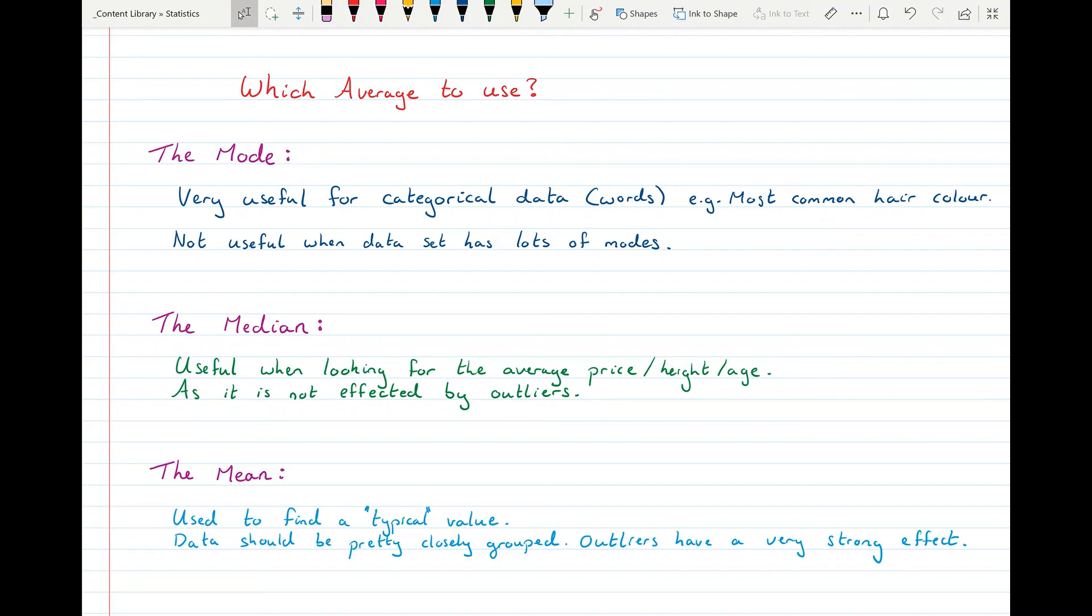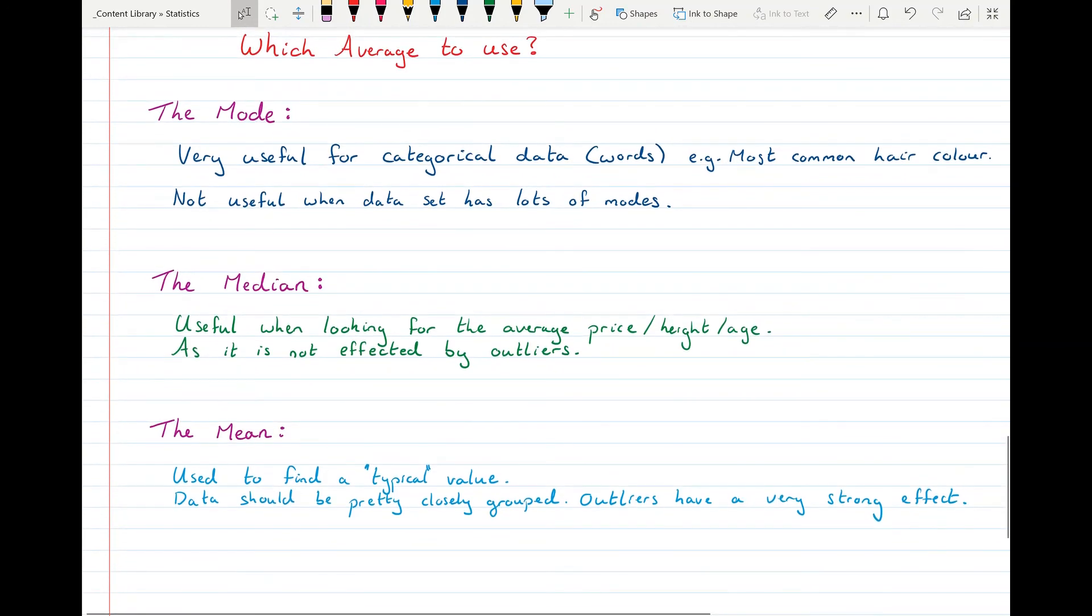The median is useful when you're looking for the average price, height, age, kind of something like that. Something that's going to be in the middle. So it's not affected by outliers. So if you have someone that's very, very tall or someone that's very, very small, the median isn't going to account for that. So you will get a good idea of where the middle height is.